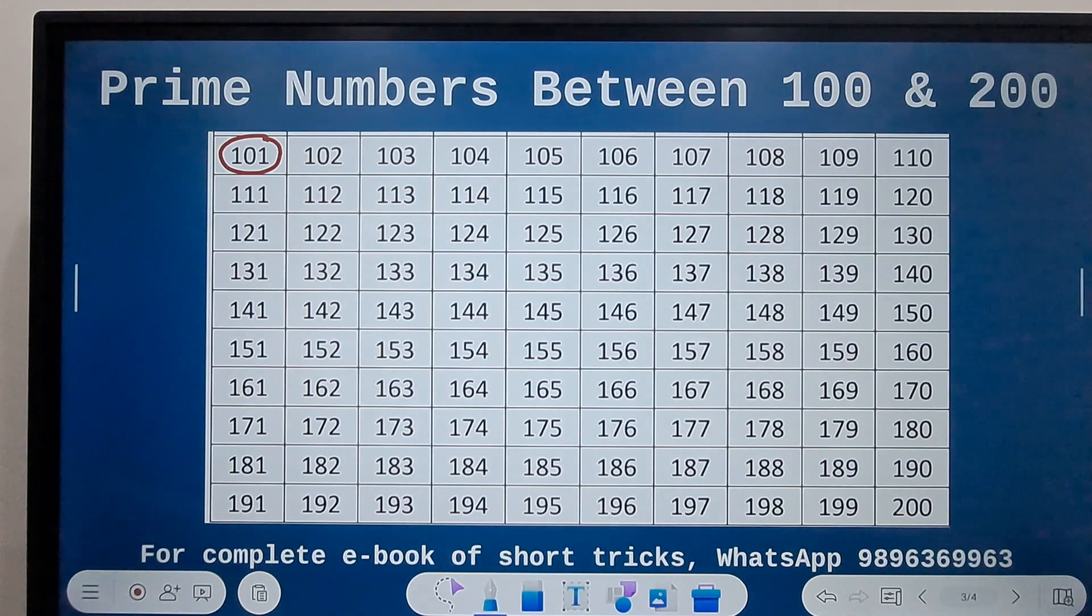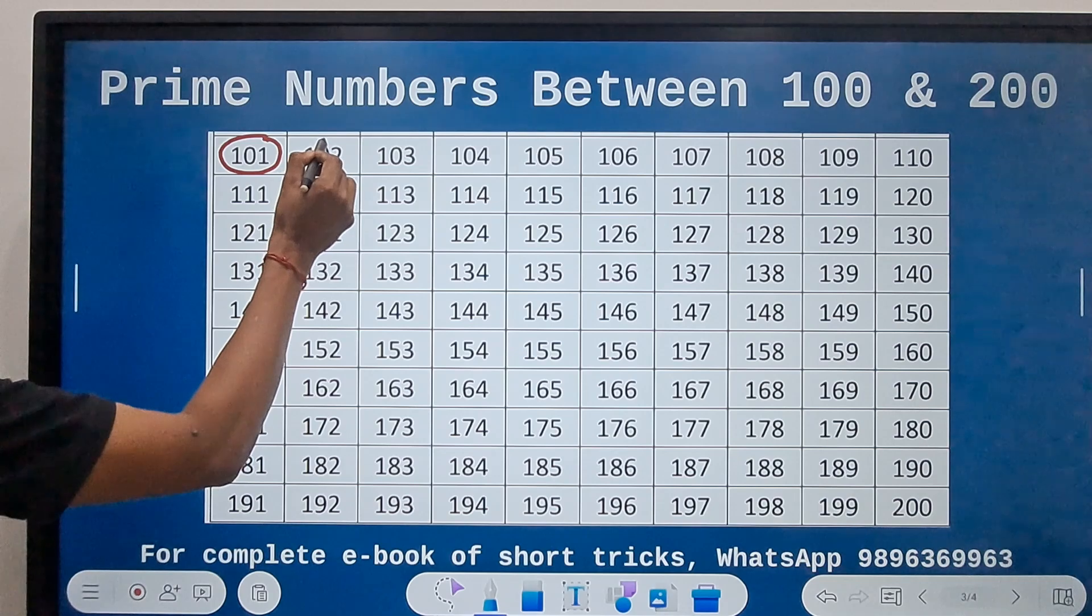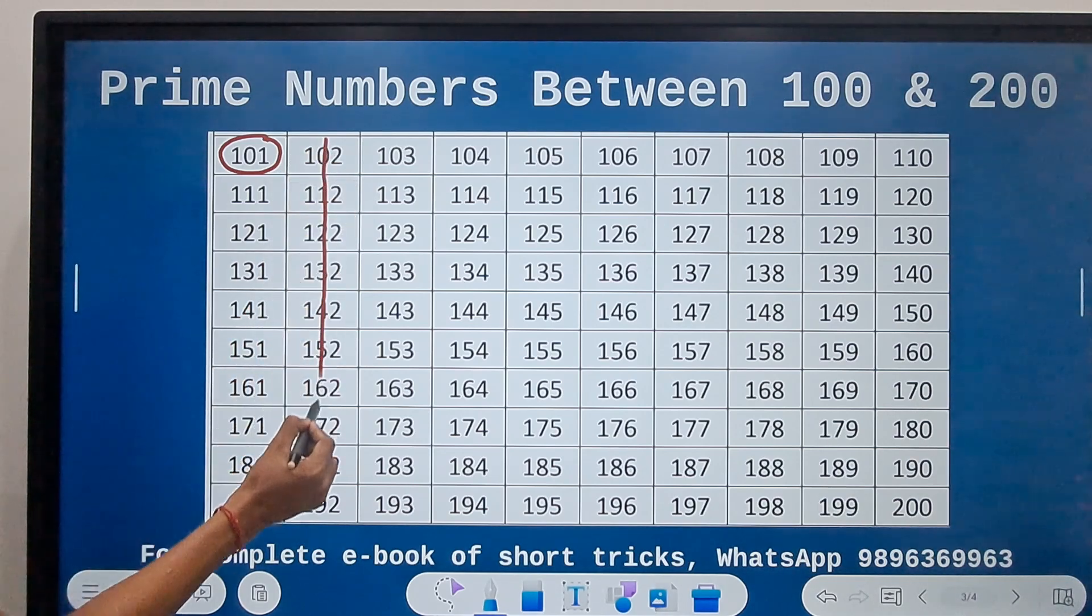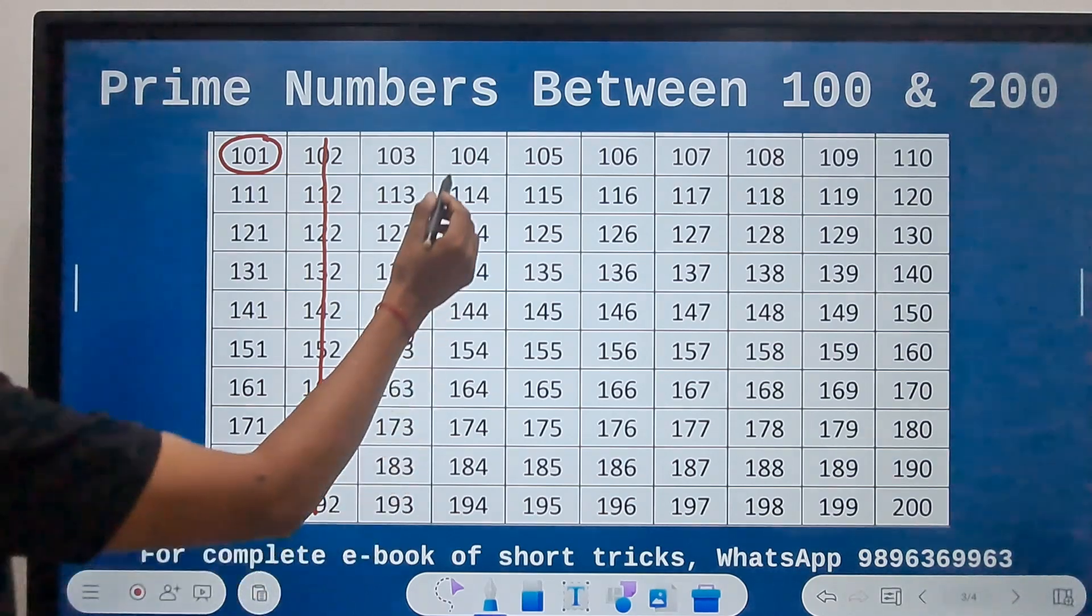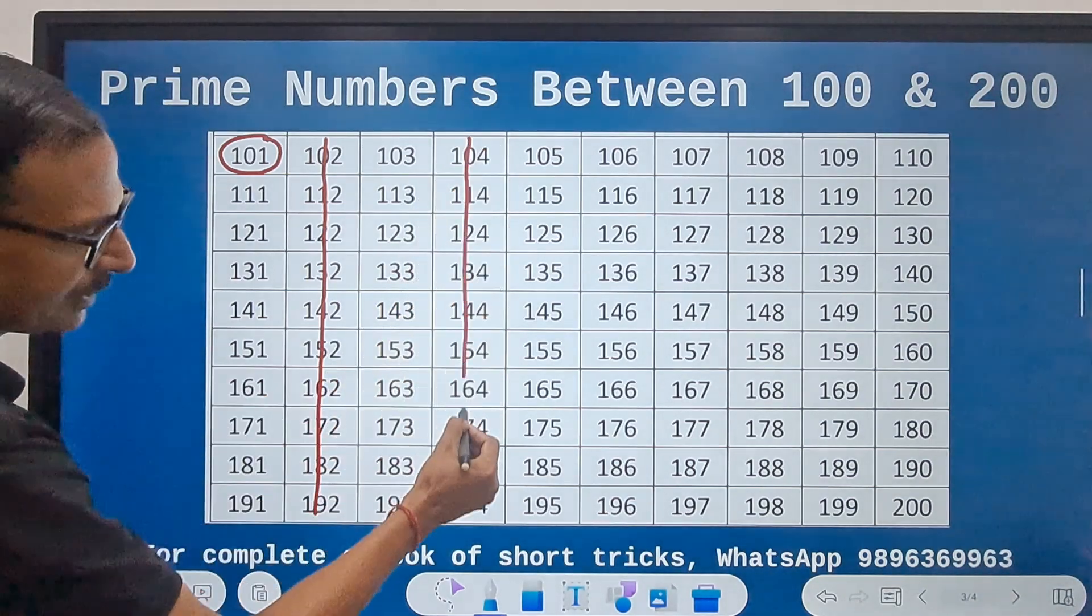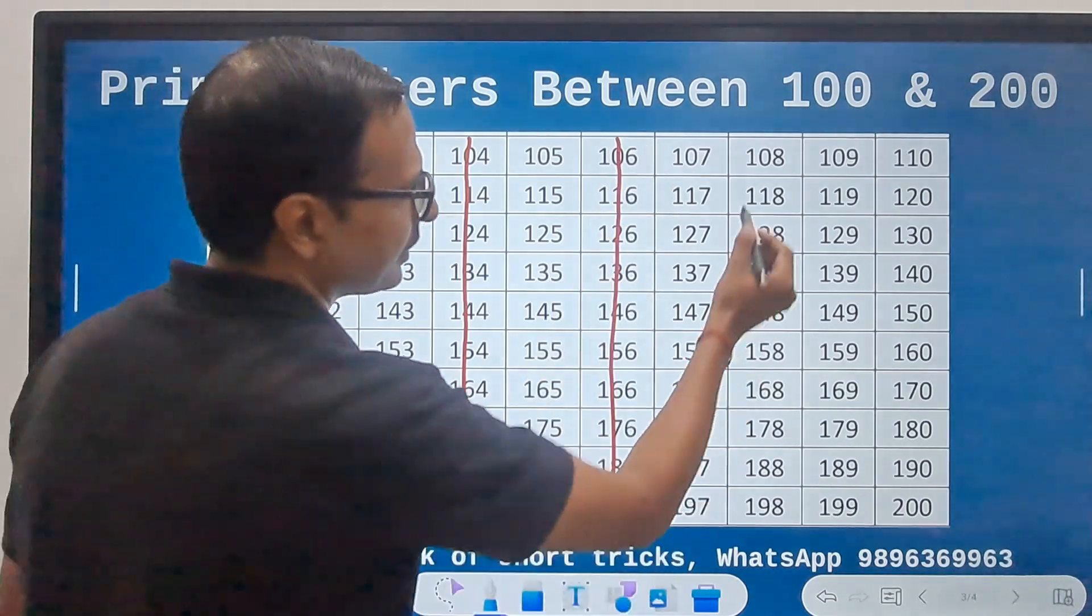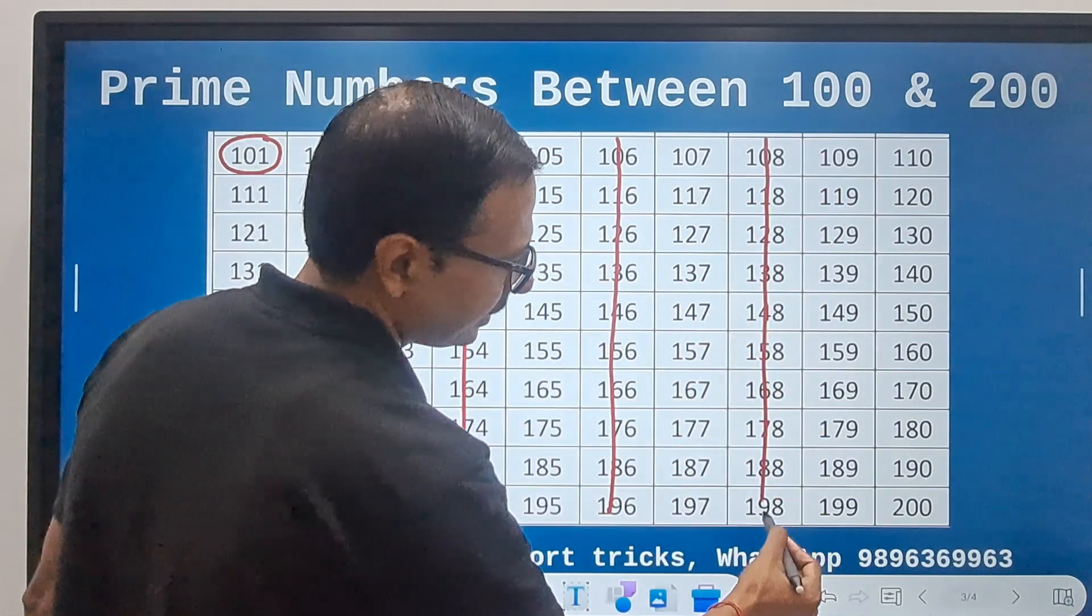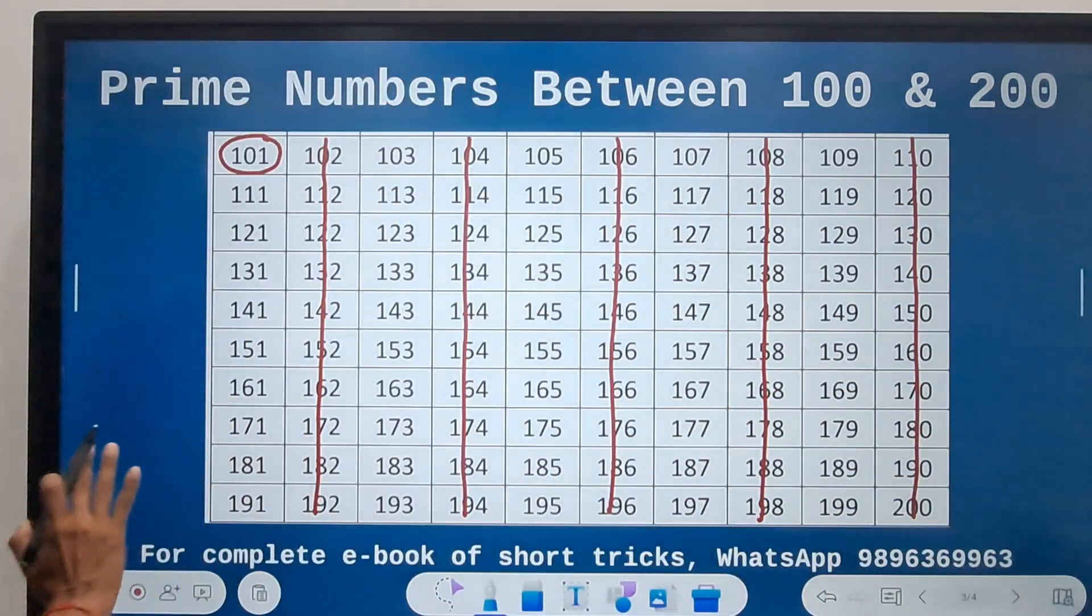After that, the number 102 is an even number, so that cannot be prime, and the entire column is even, so that is ruled out. Similarly 104, entire column is ruled out, 106, 108, and 110. So all these columns are ruled out.